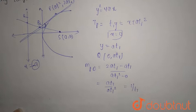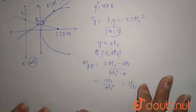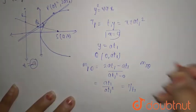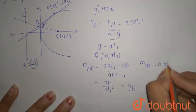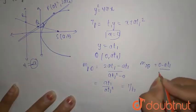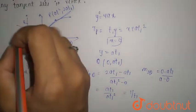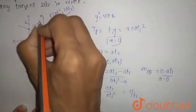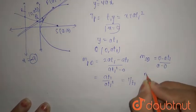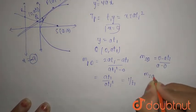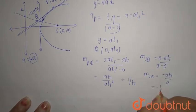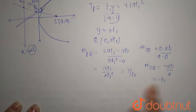When you talk about the slope of SQ, it will be (0 − at₁) divided by (a − 0), because the coordinates of Q are (0, at₁). So the slope of SQ is −at₁ divided by a, which equals −t₁.